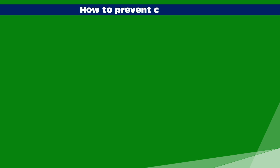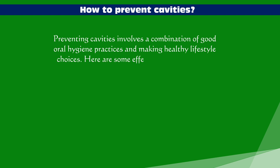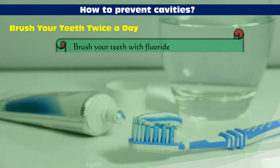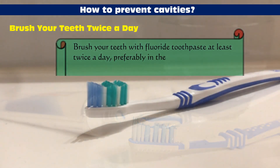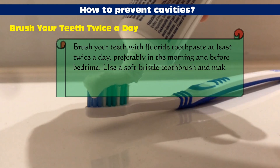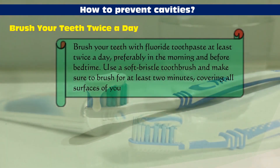How to prevent cavities. Preventing cavities involves a combination of good oral hygiene practices and making healthy lifestyle choices. Brush your teeth with fluoride toothpaste at least twice a day, preferably in the morning and before bedtime. Use a soft bristle toothbrush and make sure to brush for at least two minutes, covering all surfaces of your teeth.